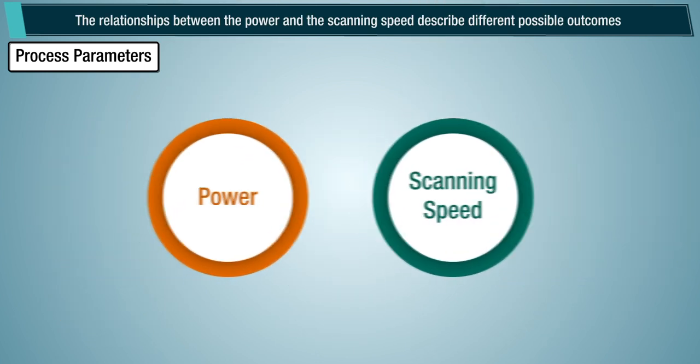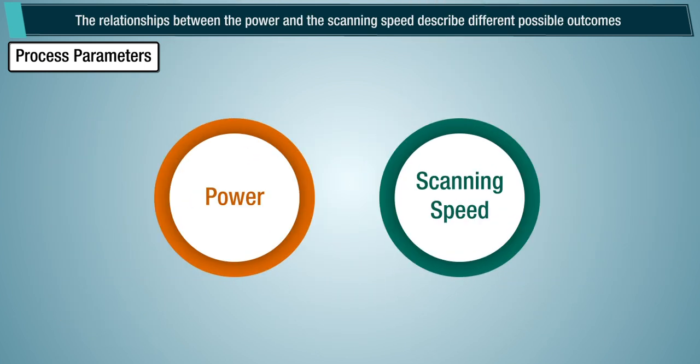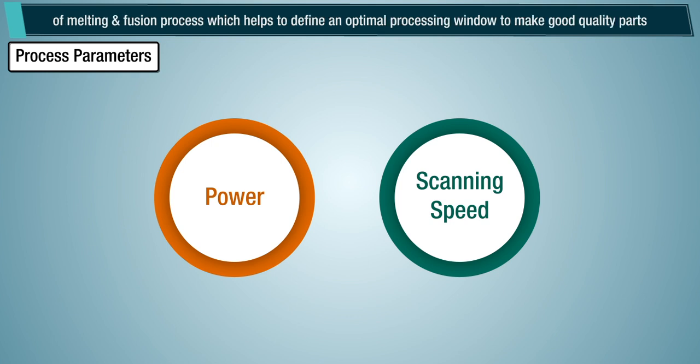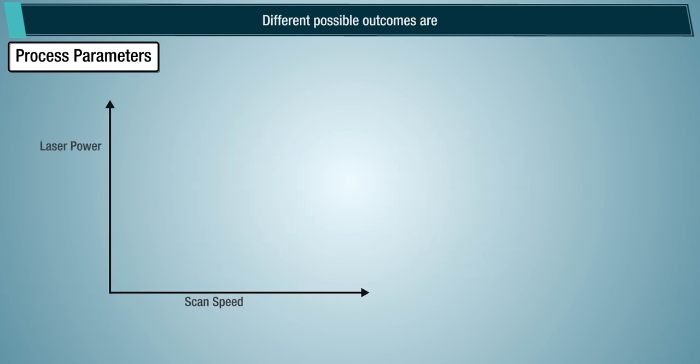The relationships between the power and the scanning speed describe different possible outcomes of melting and fusion process, which helps to define an optimal processing window to make good quality parts. Different possible outcomes are: lack of fusion.